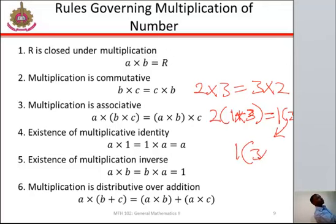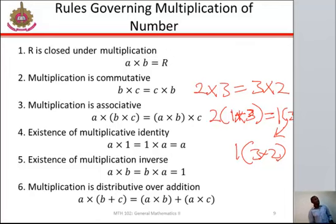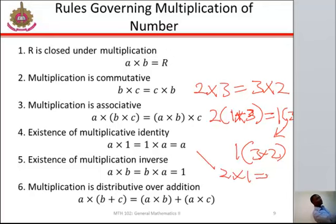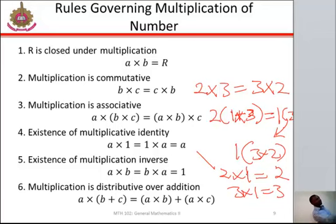For example, 2 times bracket 1 times 3 should give you the same answer as 1 times bracket 3 times 2. The fourth rule is the existence of multiplicative identity — if you multiply a particular number by 1, you are going to get that same number again. For example, 2 times 1 gives you 2. So the multiplicative identity is 1.